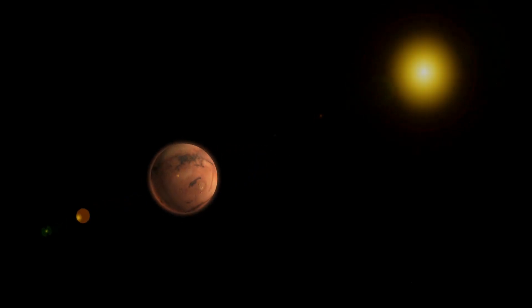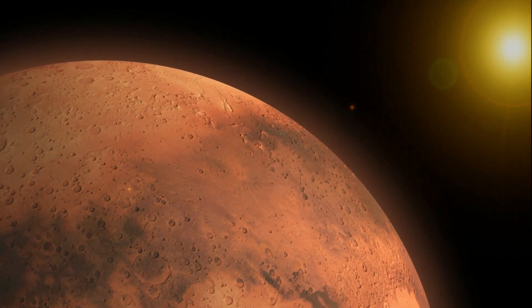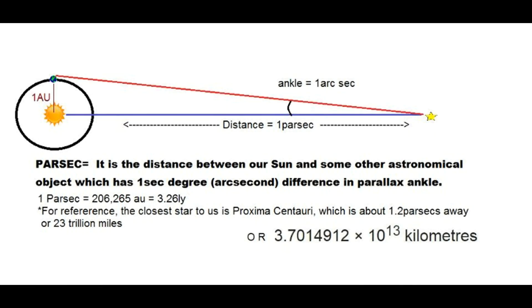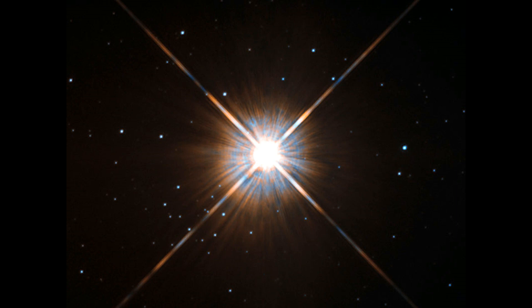The parsec. The parsec is a unit of distance — it is the distance between our Sun and some other astronomical object which has one arc second difference in parallax angle. As you can see, one parsec measures the distance from our Sun to the star which has one arc second degree difference. That angle is determined by observing a specific star and comparing it to the Sun, then repeating the same observation from another point in Earth's orbit. One parsec is equal to 3.26 light years, and with that in mind, the closest star to us, Proxima Centauri, is just 1.2 parsecs away.